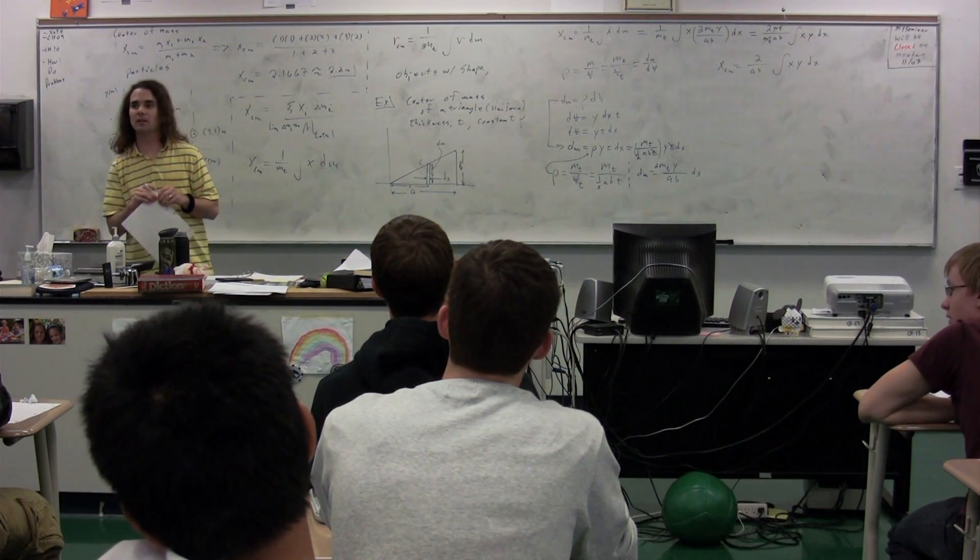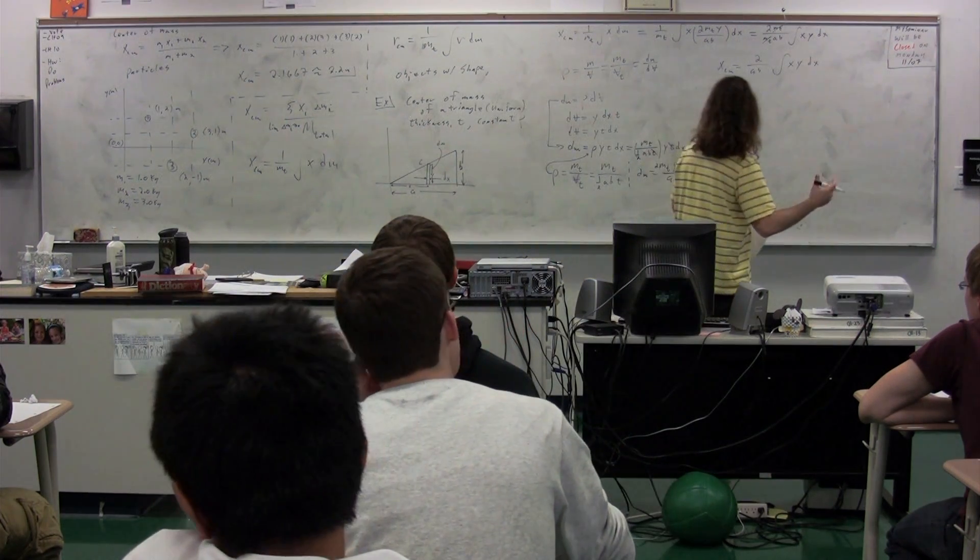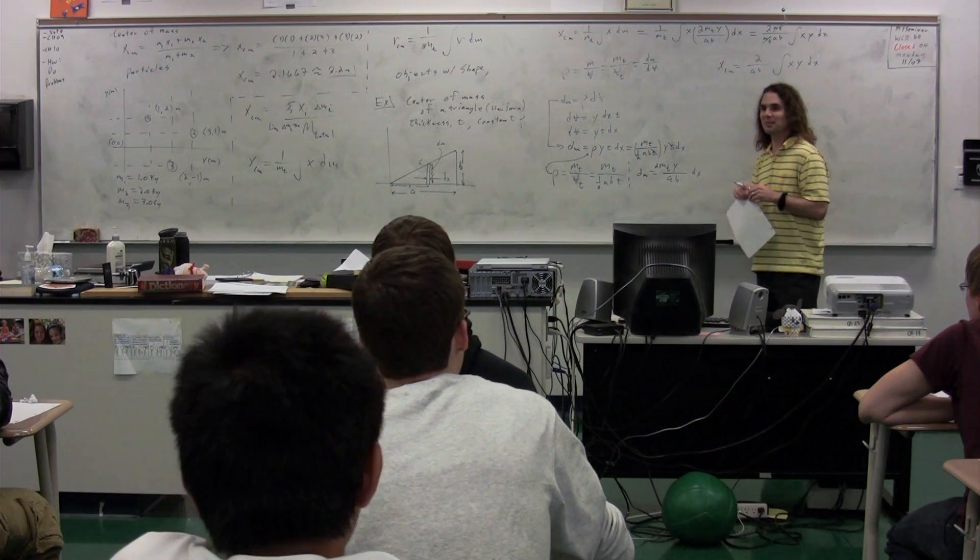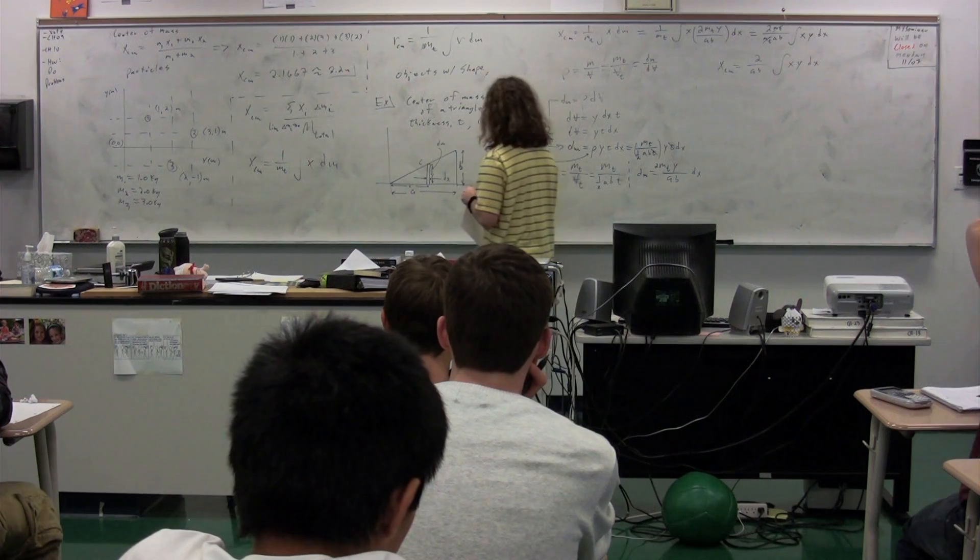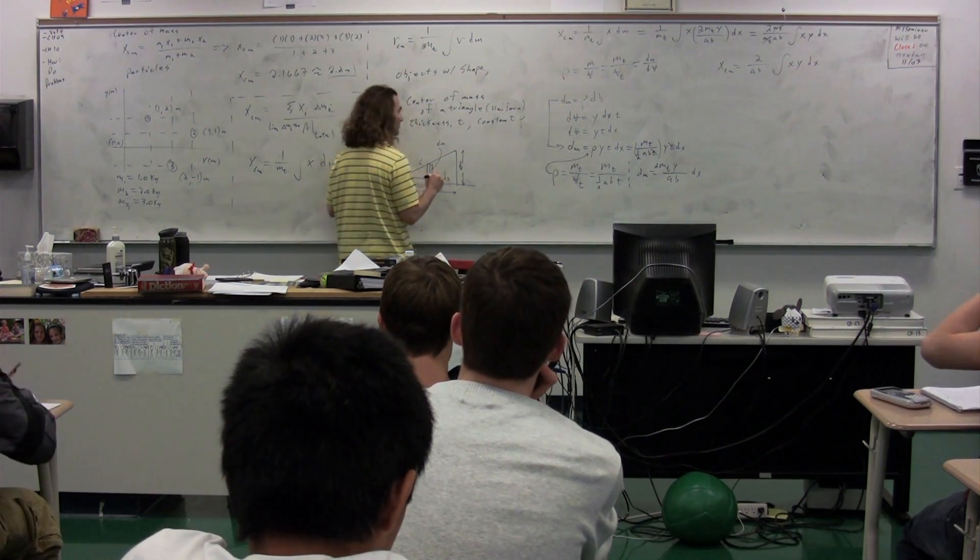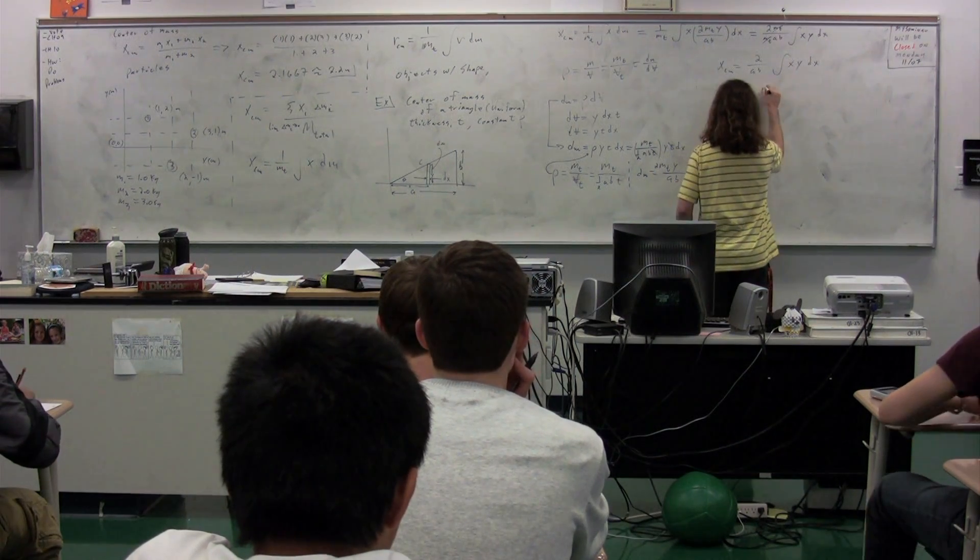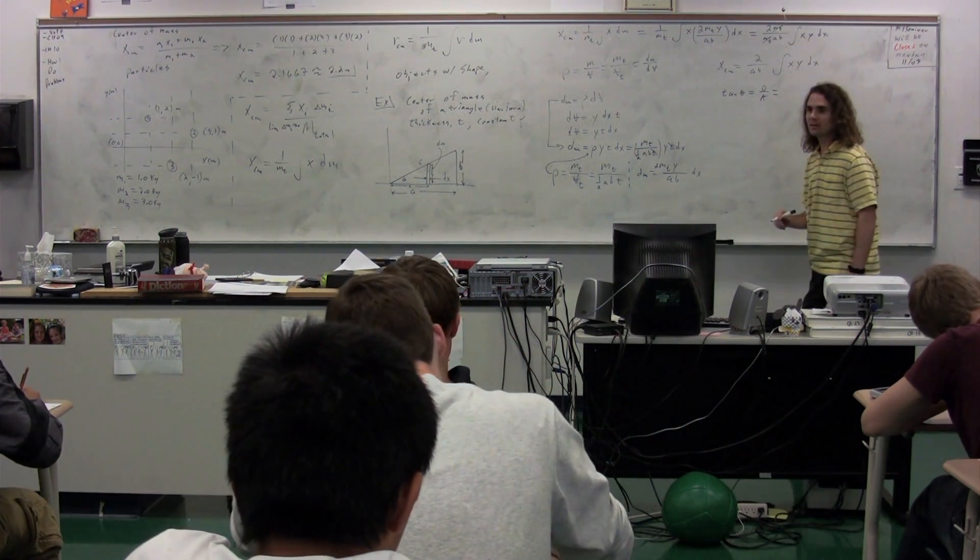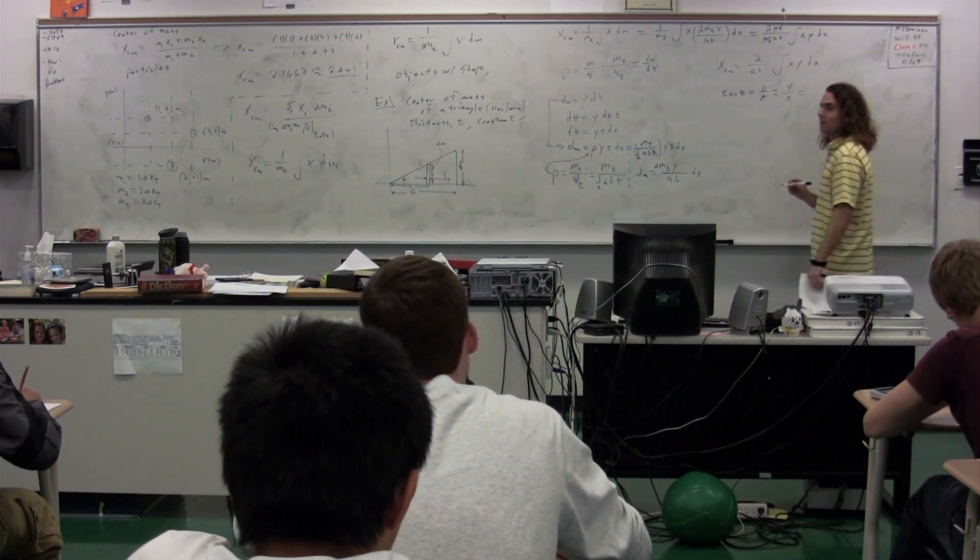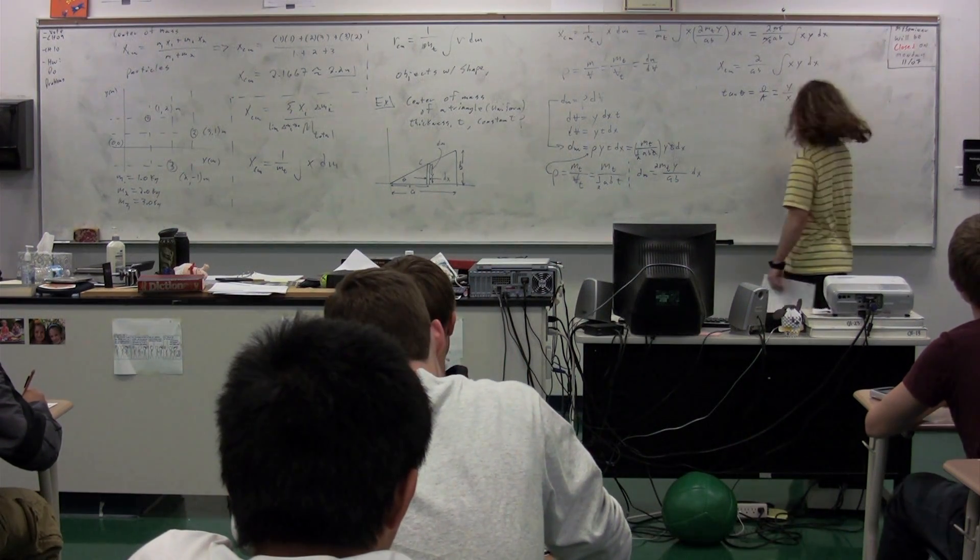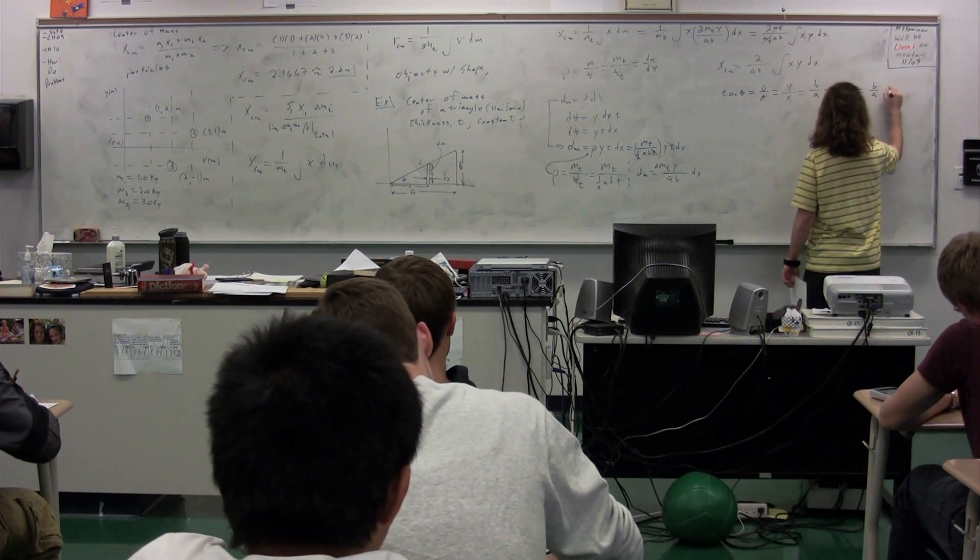So we can substitute in something for y so that we have an x in there instead. Could you use trig? We could. Tangent. I'll put tangent theta is equal to opposite over adjacent. What is opposite theta? y. What is adjacent to theta? x. What is also opposite to theta? b. And? a. In other words, y is equal to b over a times x.